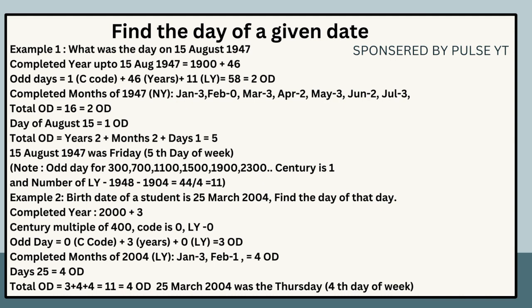Note: The odd day code for century years 300, 700, 1100, 1500, 1900, 2300 is 1. Number of leap years: 1948 − 1904 = 44; 44 ÷ 4 = 11 leap years.